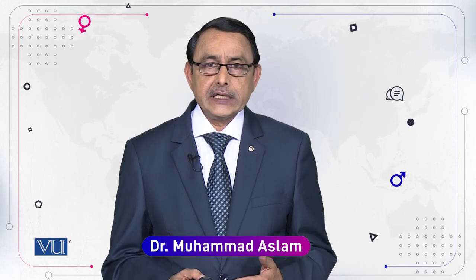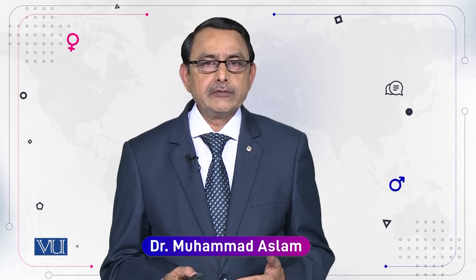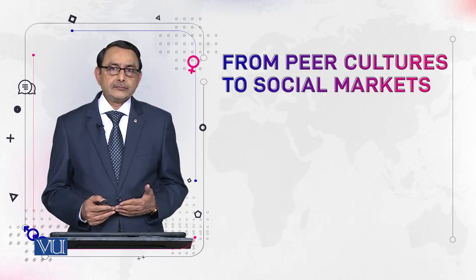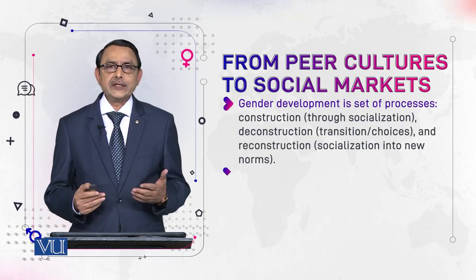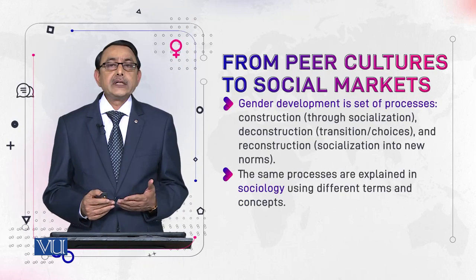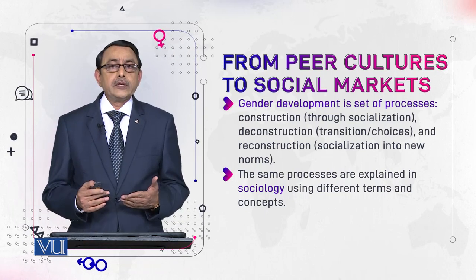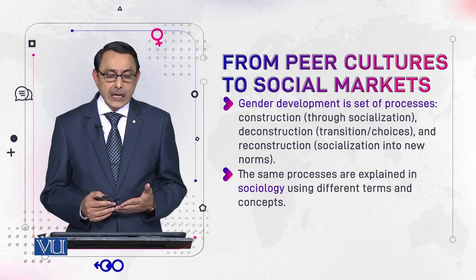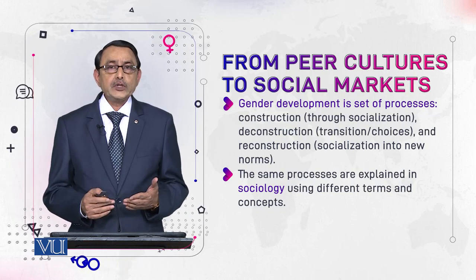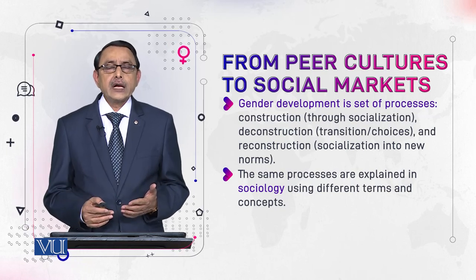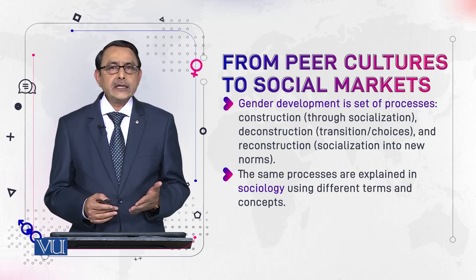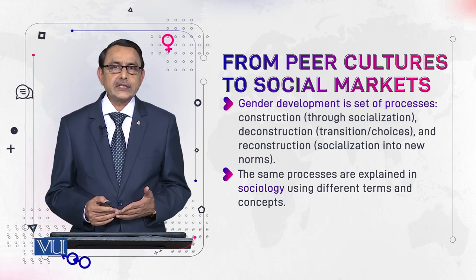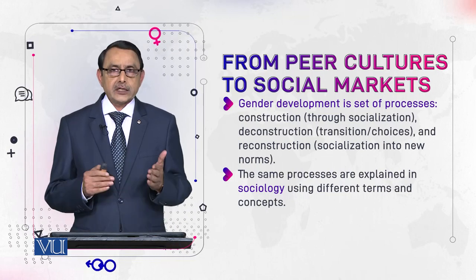This module introduces a new idea: social markers and gender development, which is the focus of our course on language and gender. Gender development is a set of processes — by this time you should be familiar with them, as we have discussed them many times. Construction happens through socialization, which is the indirect learning of what is right or wrong, what is appropriate or not appropriate.